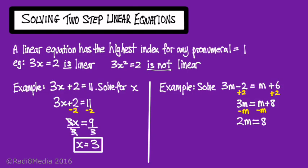2m equals 8. This means 2 times m so the opposite of timesing by 2 is dividing by 2. Do the same to both sides. The 2's cancel out and I'm left with m equals 8 over 2 or m equals 4. And that is how we go about solving linear equations that have 2 or more steps.